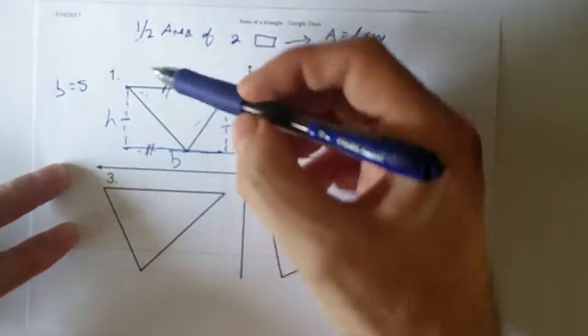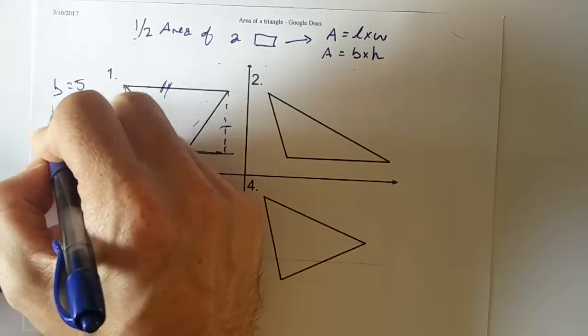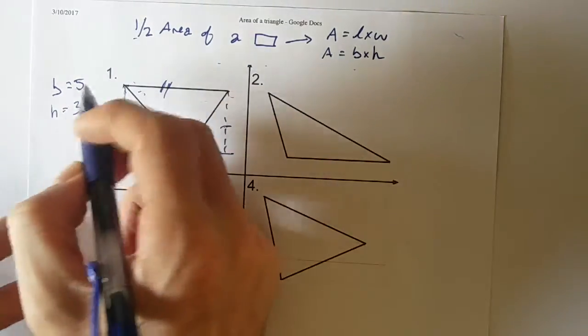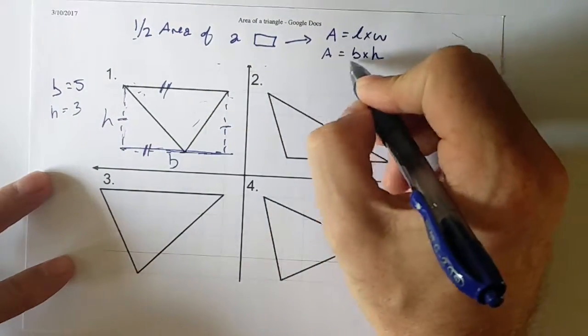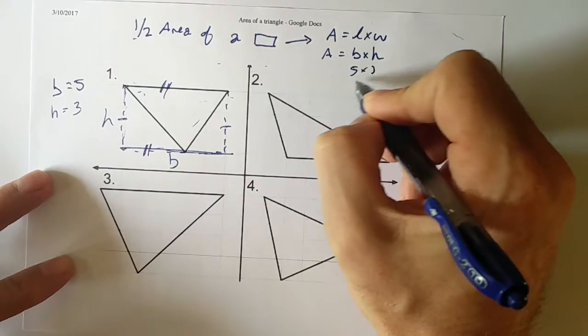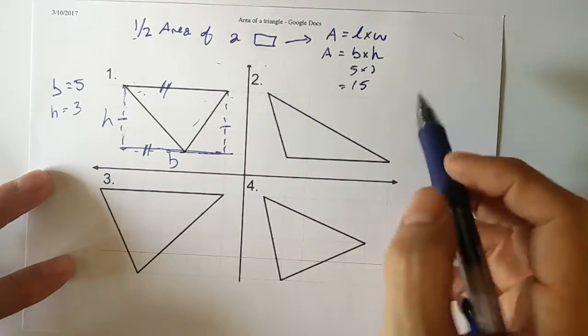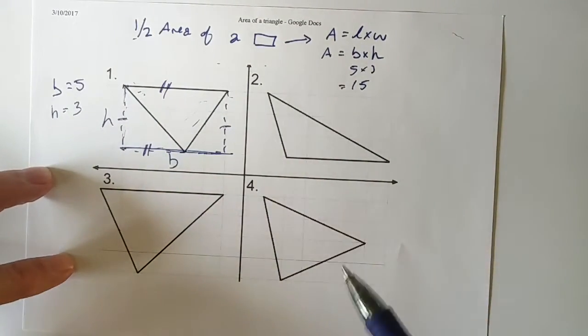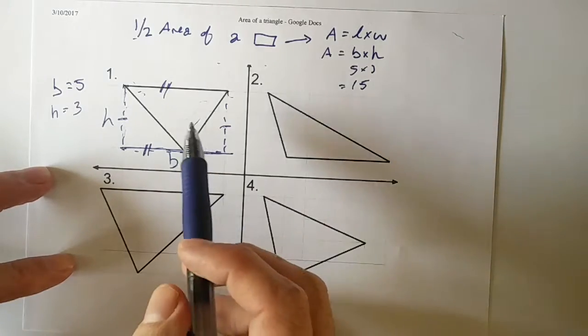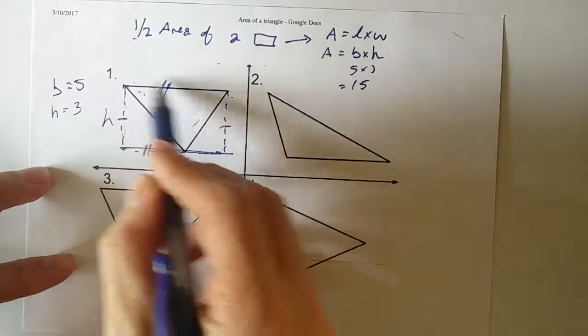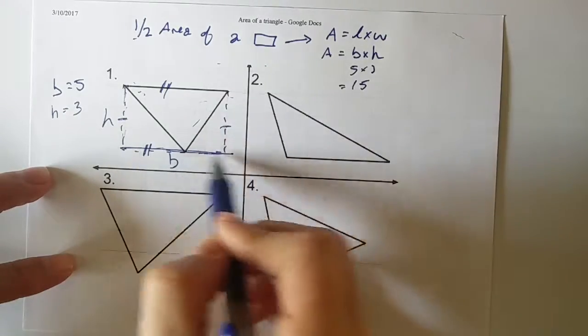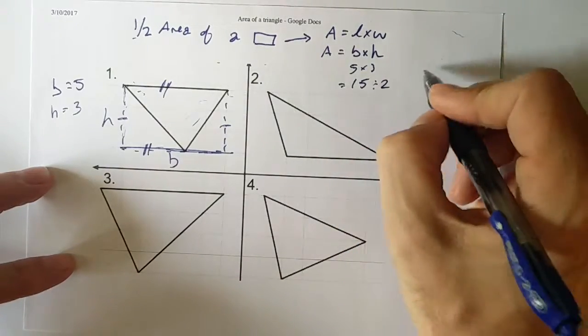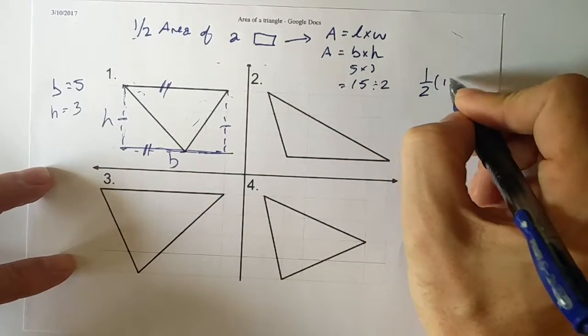And the height is 1, 2, 3. My height is 3. So the area of this entire rectangle is base times height, which is 5 times 3. So the area is 15. Now, I'm not using my units just yet. I'm just looking at the foundational understanding of area. Now, I know that this triangle is half the area of the rectangle. So for my 15, I'm actually going to have to find half of it.